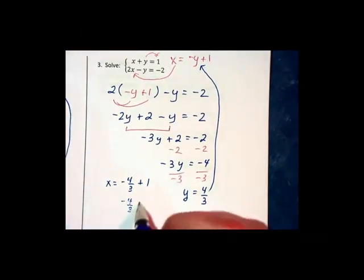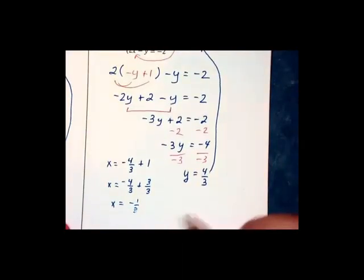So we have negative 4 thirds plus 3 thirds. Therefore, x equals negative 1 third, and the solution to our system is negative 1 third comma 4 thirds.